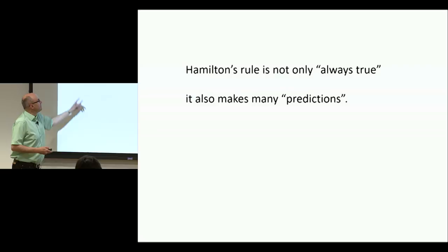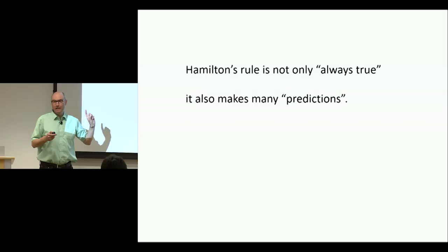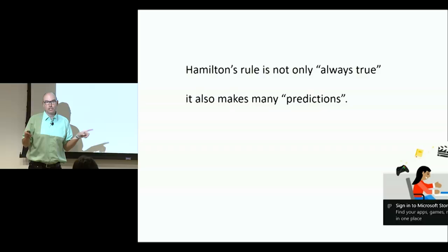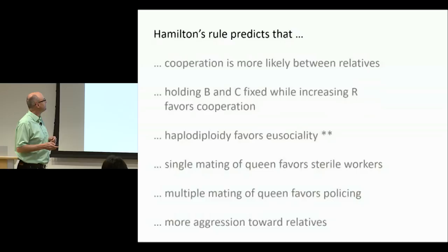Not only is it claimed that Hamilton's Rule is always true, but also that it makes many predictions. If something is always true, you would think it cannot make predictions — yet both statements are claimed simultaneously by proponents of the rule: it is always true, and it makes important predictions about evolution. Intuitively, that cannot be.